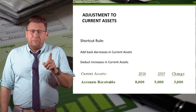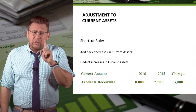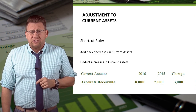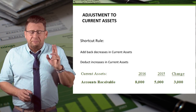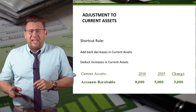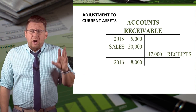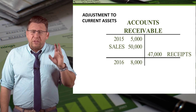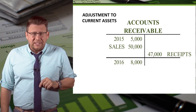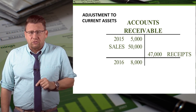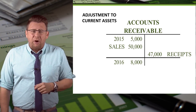Let's do the same thing, only now let's assume accounts receivable increases $3,000 from $5,000 to $8,000. So our cash receipts must be $3,000 less than our sales revenue in order to make the account balance.